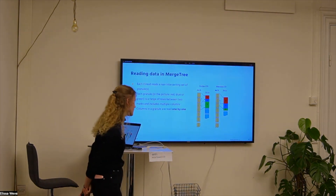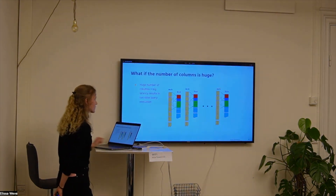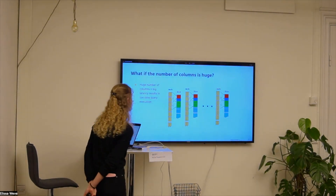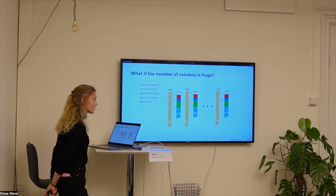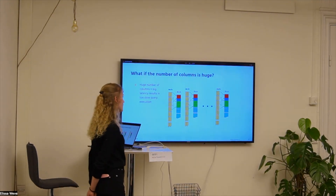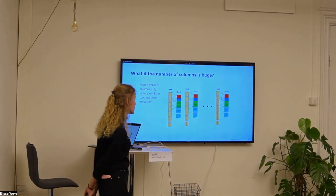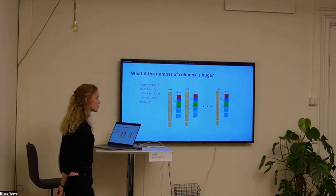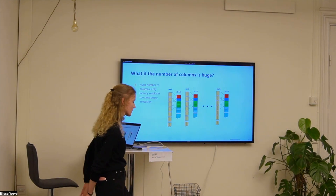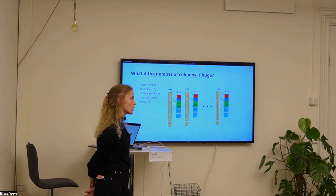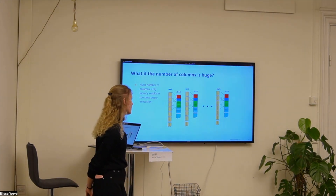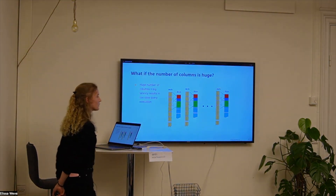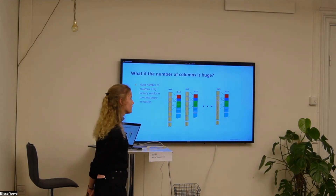So what if we have a huge number of columns? Remember, the latency to object storage is big, and it means that the query will be slow. So we need to somehow optimize it. It is obvious that we need to add parallelism between the columns as well as between the mark ranges. But we have a limited number of threads, so we cannot allocate more threads to do that.